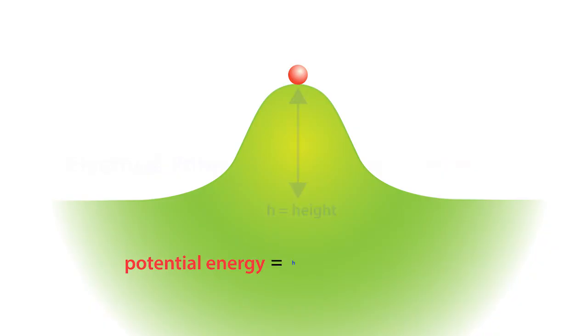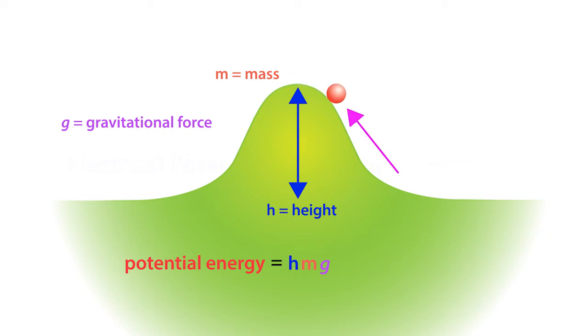Potential energy is equal to the height of the ball times the mass of the ball times the gravitational constant. If we let the ball roll down the hill and quickly apply an opposing force to stop the ball, that opposing force or kinetic energy must equal the potential energy in order to stop the ball.